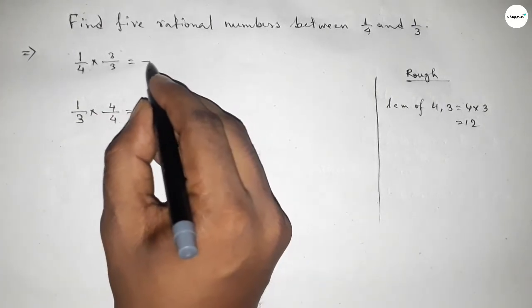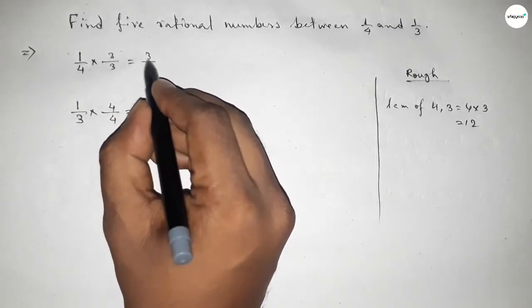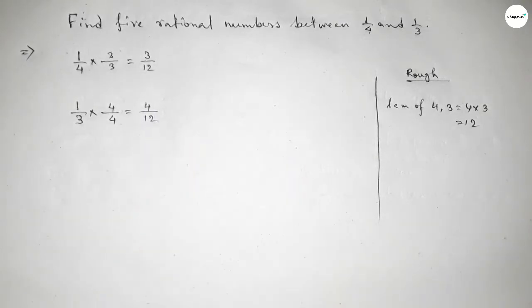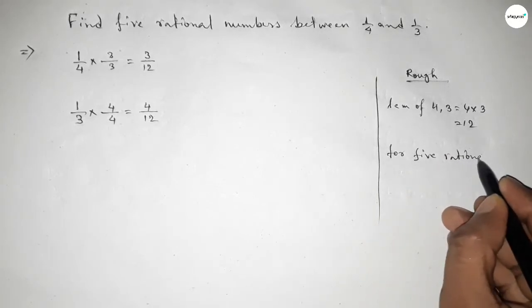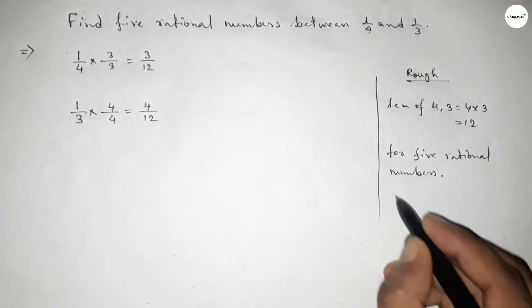So this is 3 over 12 and this is 4 over 12. Now for finding five rational numbers between any two numbers we have to follow this method. We should multiply both numbers by 5 plus 1 equal to 6.